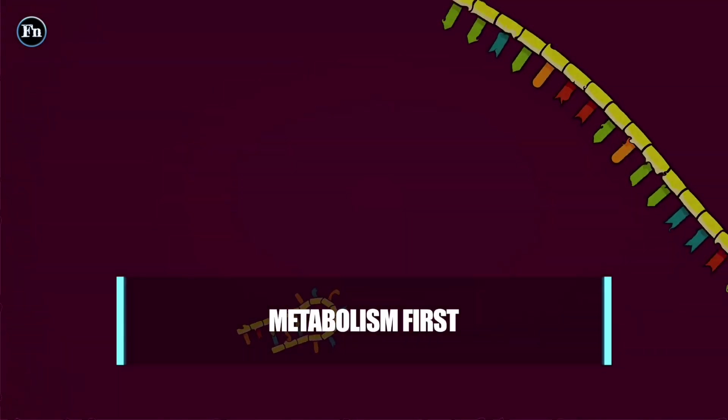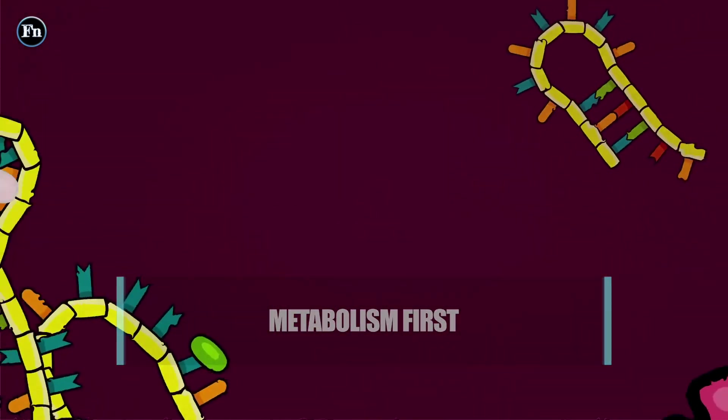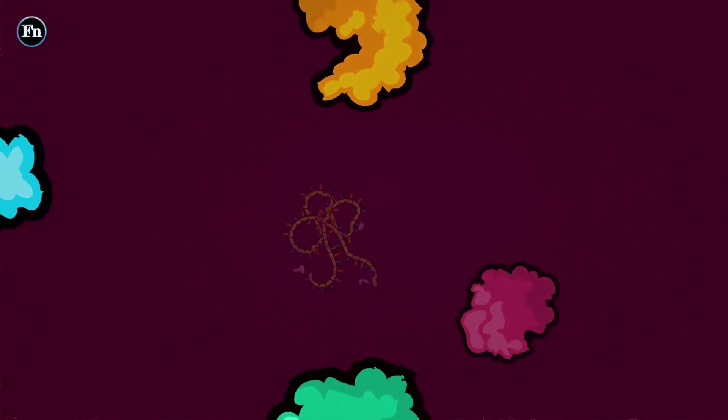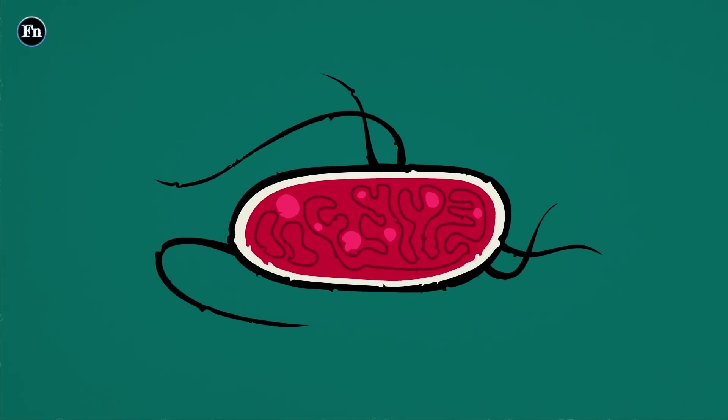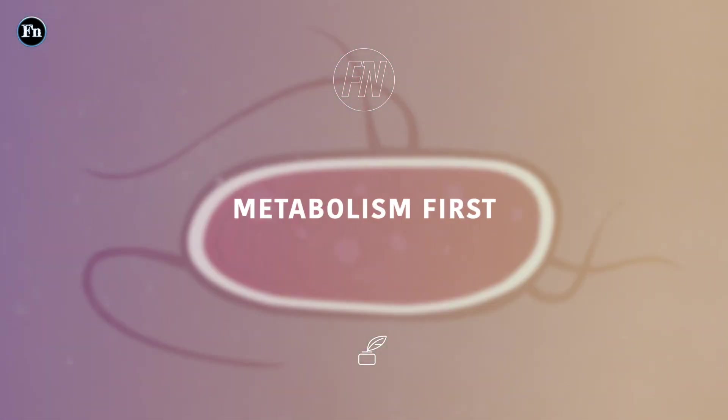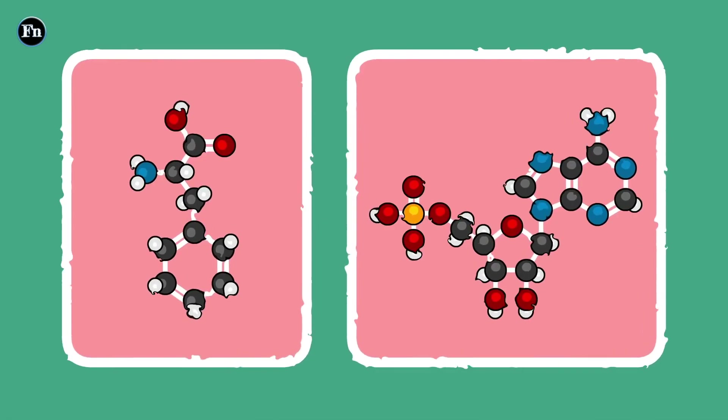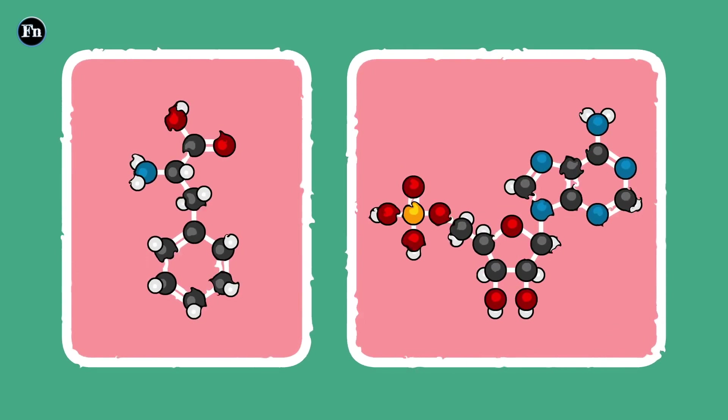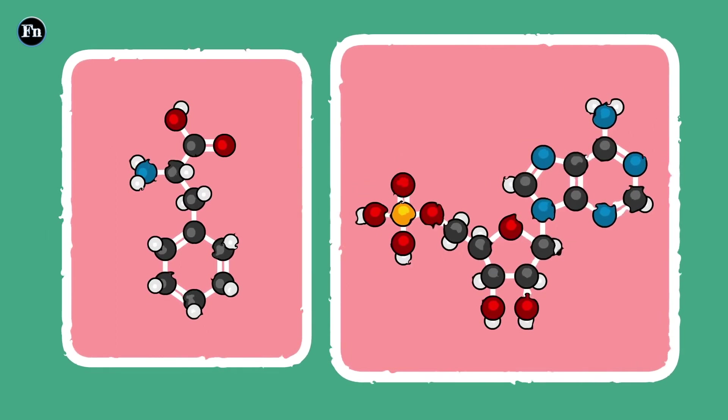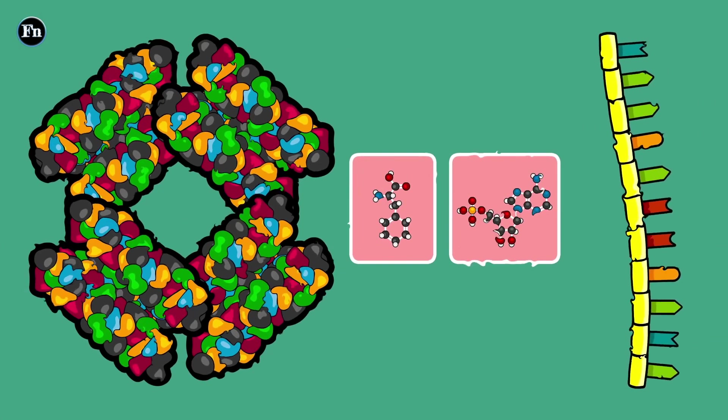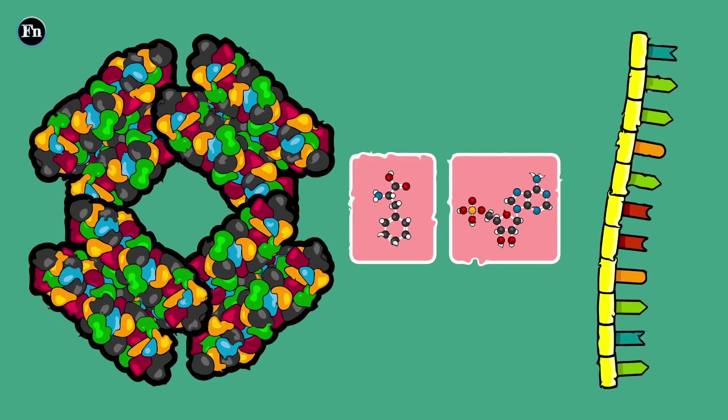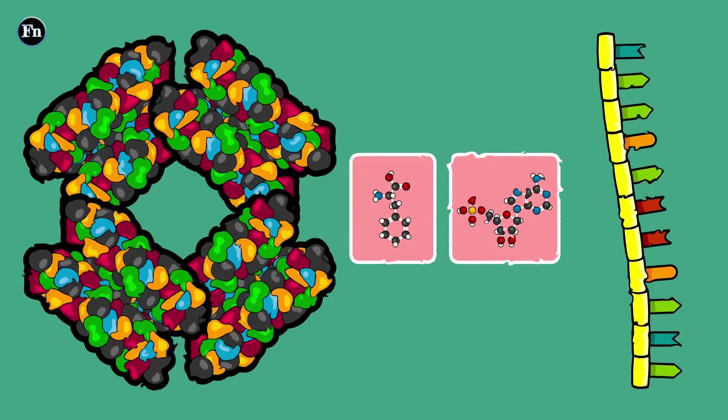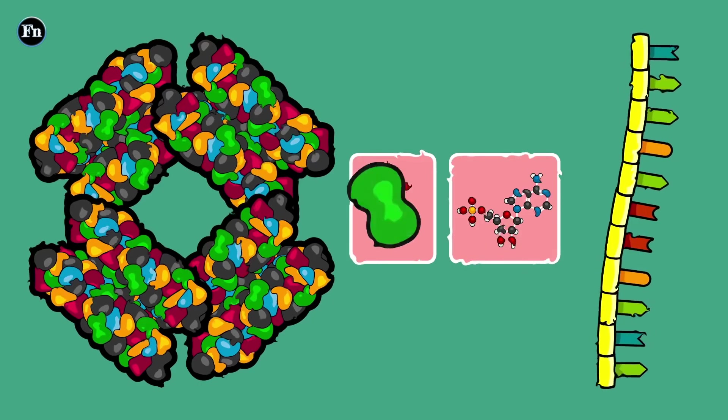Metabolism first. Instead of developing from complex molecules like RNA and DNA, life may have actually developed from the interactions of much smaller molecules. This is known as the metabolism first theory. Covalent bonds between organic compounds may have formed something similar to what we would call a cell membrane. Over time, more complex modules could have formed that made this rudimentary cell wall better and better.